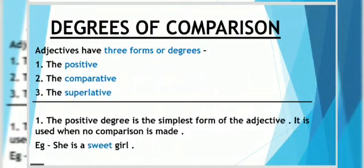Now let us see the first one, i.e. positive degree. It is the simplest form of adjective. It is used when no comparisons are made. The example is, she is a sweet girl. Here sweet is the positive degree of adjective.